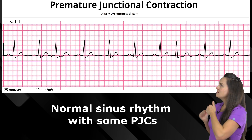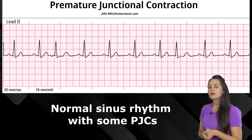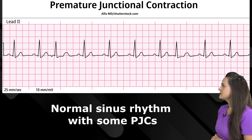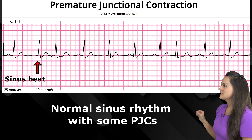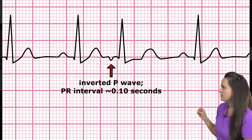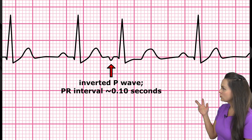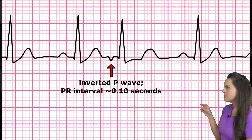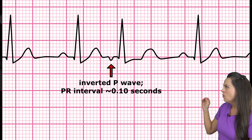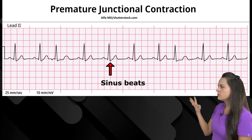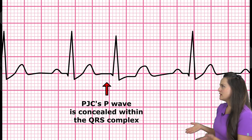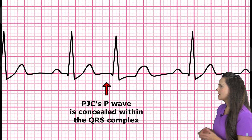Here we have an example of a PJC. The underlying rhythm is normal sinus rhythm with a couple of PJCs that have shown up. We have sinus beat, sinus beat, and then — bam — premature junctional contraction. Notice the P wave there: it's inverted and close to that QRS complex. If you measure that PR interval, it's less than 0.12 seconds — about 0.10 seconds. Then we have four more sinus beats and then another PJC, and this time its P wave is concealed, hidden within that QRS complex.